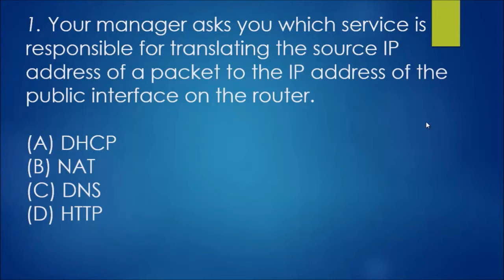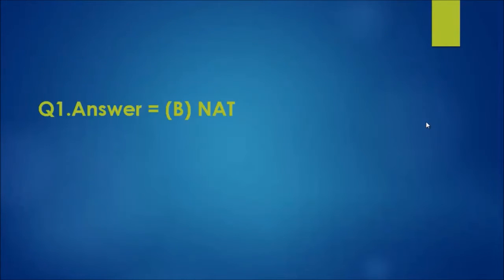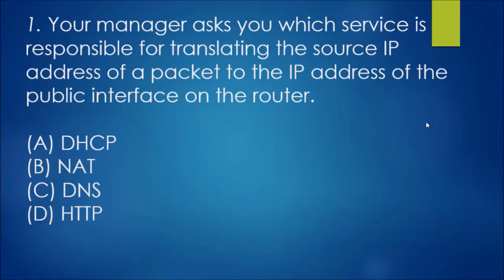It is not DHCP — that gives out IP addresses dynamically to end systems. DNS deals with translating domain names to IP addresses. HTTP is a web protocol for accessing web pages. So that leaves us with NAT. NAT is responsible for the translation there — converting the source IP address to the public interface IP.